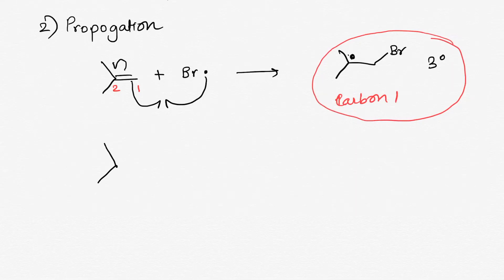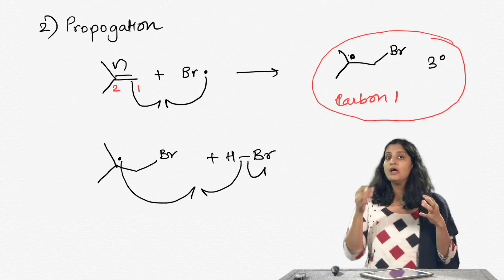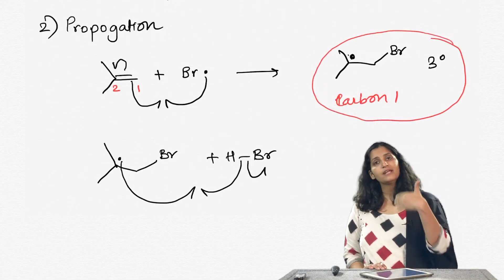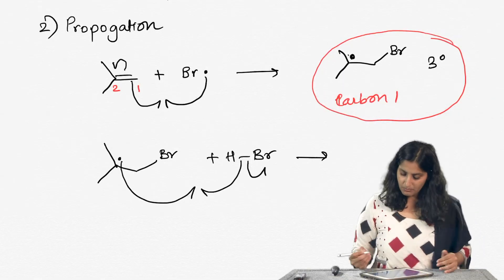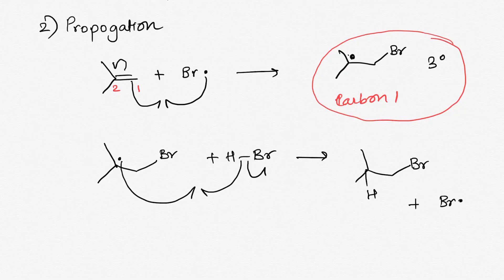The tertiary carbon radical reacts with HBr: the H-Br bond breaks such that hydrogen takes one electron and bonds to the carbon radical, while bromine leaves with the other electron, creating another bromine radical. In the propagation step, one bromine radical is consumed but another is regenerated. This new bromine radical reacts with the next alkene molecule and the cycle repeats until most alkene is consumed, yielding the alkyl bromide with bromine on the less substituted carbon.